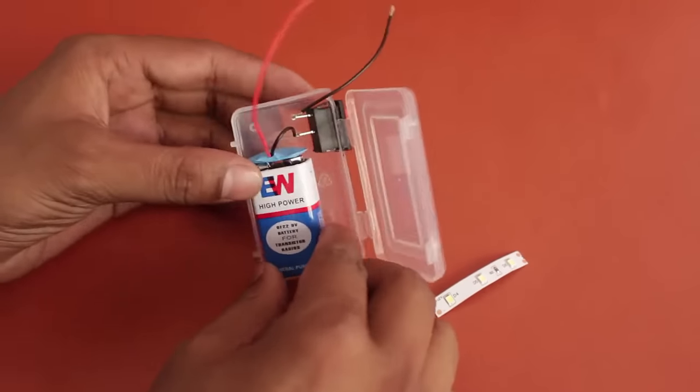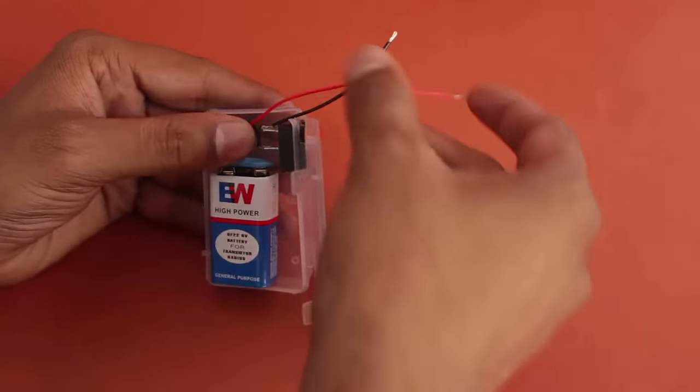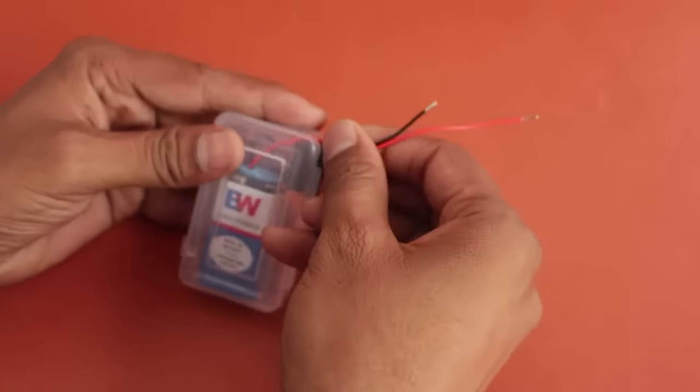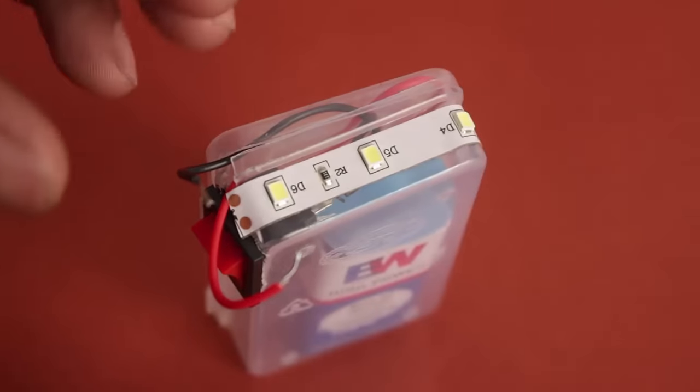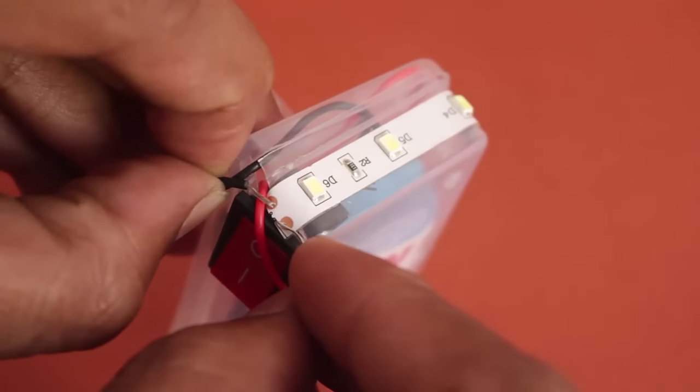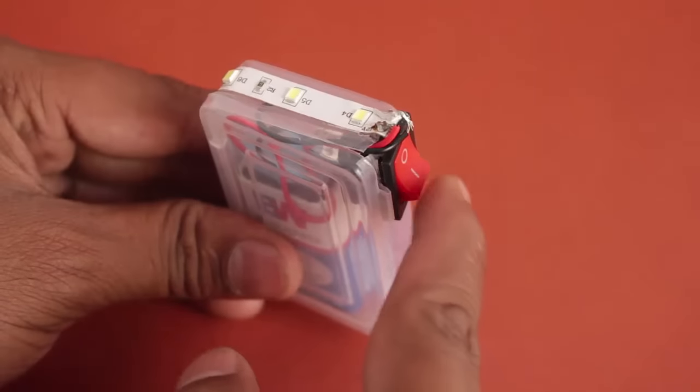Then house the battery inside the box. Make an opening for the battery leads to come out. Stick the LED strip on top of the plastic box, and then connect the battery leads to the LED.